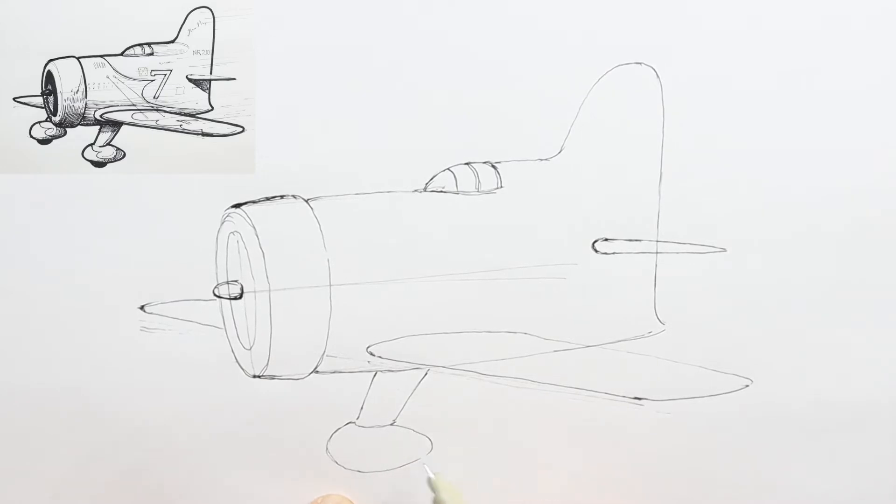Then here we're going to draw a teardrop shape with the taper towards the back, and sort of indicate a wheel that's hidden underneath.